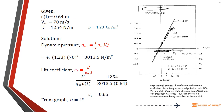We need the angle of attack. From the shown graph we can obtain the required angle of attack for CL = 0.65. Thus alpha is 4 degrees.